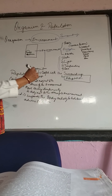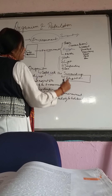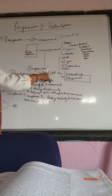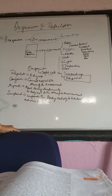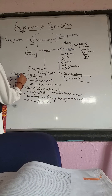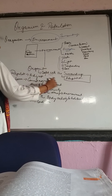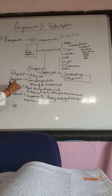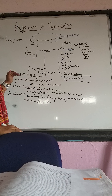When the organism successfully copes with the surrounding, we call it adaptation. Adaptation basically is adjusting. We will come across three factors. This adaptation is adjustment to the surrounding.